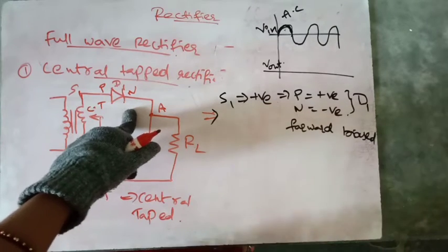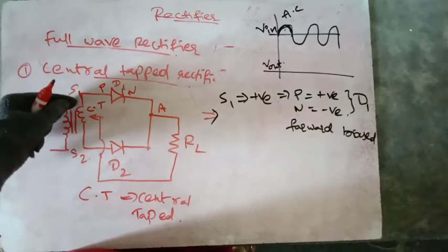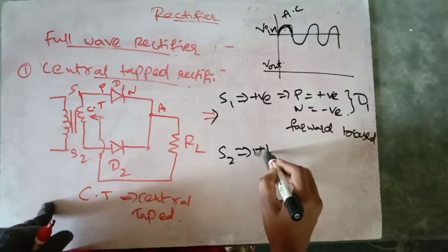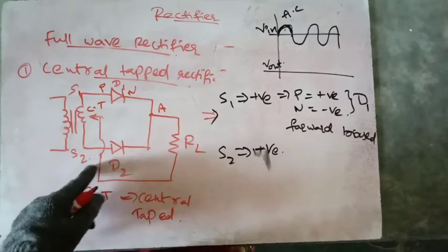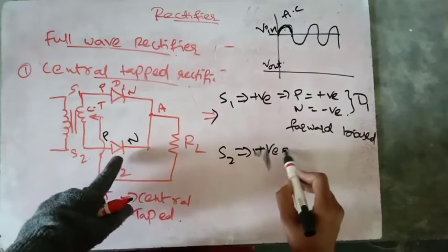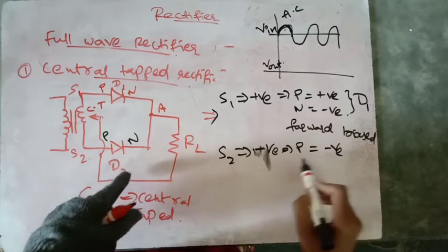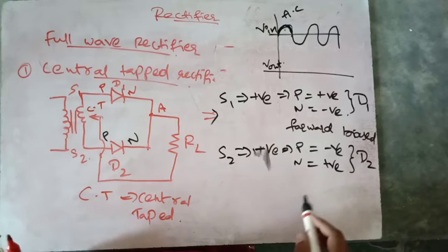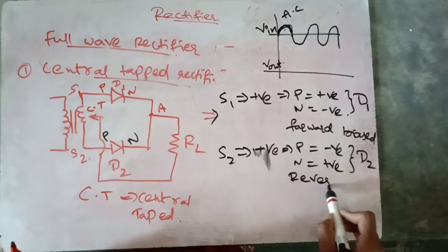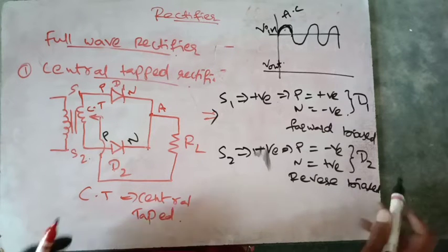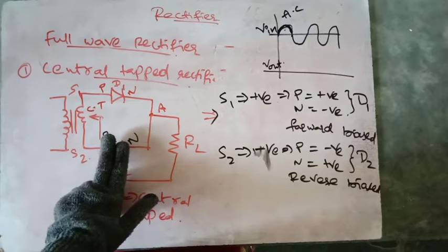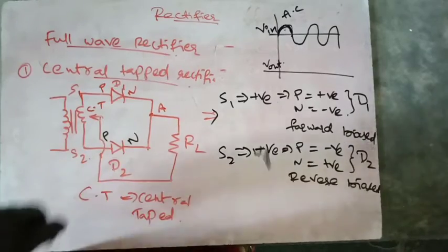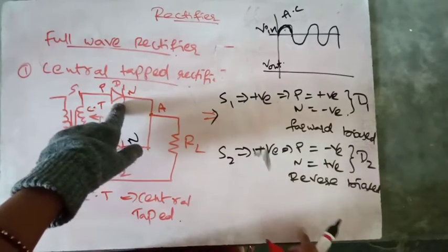Diode D1 is forward biased. As S1 is positive, S2 will be negative. For diode D2, P will be negative and N will be positive, so diode D2 will be reverse biased. That means there will be no current flow through diode D2, and the current flows only through diode D1, because D1 is forward biased.